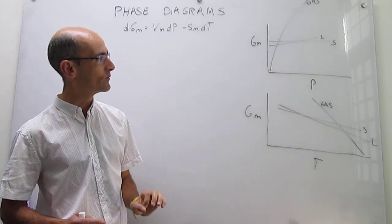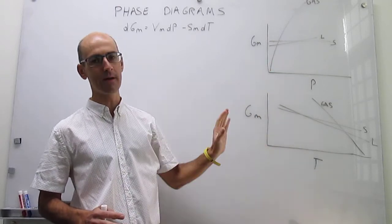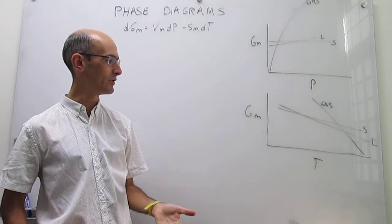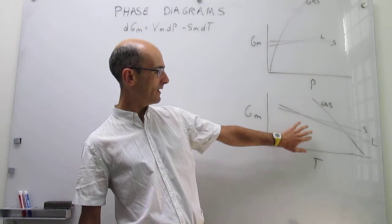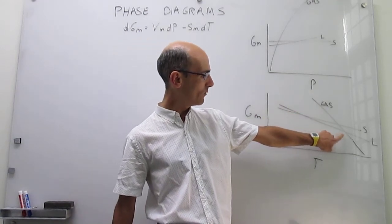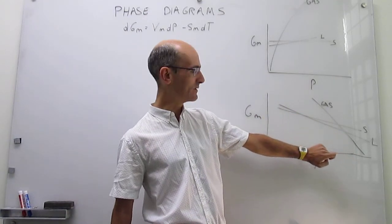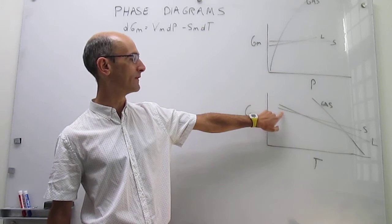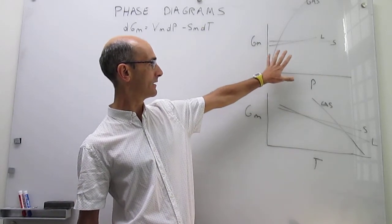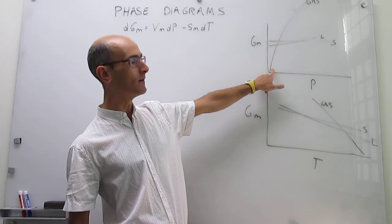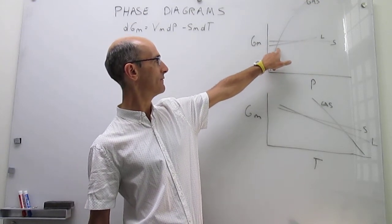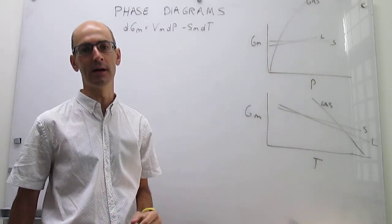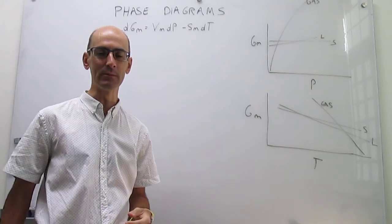The key is to recognize that at any point in these graphs, the phase that is stable is the one of lowest molar Gibbs energy. At high temperature, for example — this graph is at constant pressure — the gas is the most stable phase. But if you cool down, the solid eventually becomes the most stable phase. With pressure, at constant temperature, when the pressure is very low the gas is stable, but as you increase the pressure the liquid becomes stable, and eventually at very high pressure the solid will be the stable phase.